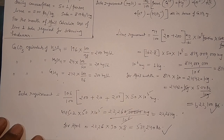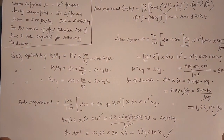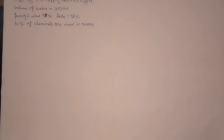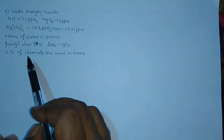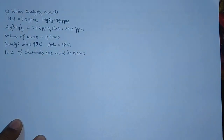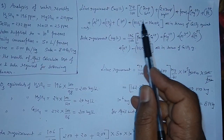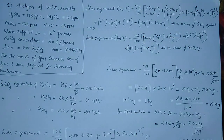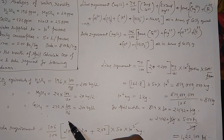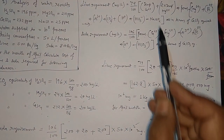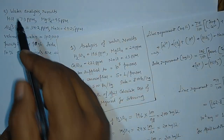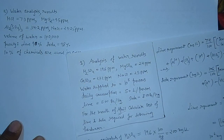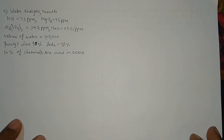This type of numerical can have many variations. Let me solve one more numerical to make things clearer. The data given is: HCl (7.3 mg/L), MgCl₂ (9.5 mg/L), Al₂(SO₄)₃ (34.2 mg/L), and NaCl. The volume of water to be softened is 1 lakh liters. In this second numerical, instead of first converting all impurities to CaCO₃ equivalents separately, I will directly put the values and multiplication factors into the formula.